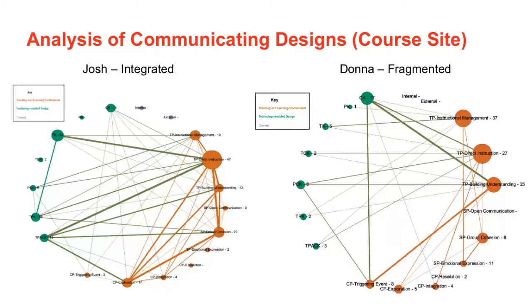When you look at the LMS course site, you can see that this might be a better space for academics to communicate their design. This was looking at all the times they put instructional text in their site around objects and announcements to see how they were describing and leading students through these designs. Again, there is a lot of instructional management. Josh was a lot better at putting that instructional management in relation to the activities he wanted students to achieve and how they were using technology to do those activities, whereas Donna was a lot less successful at communicating her hopes for the design and how the technologies were being used to support it.